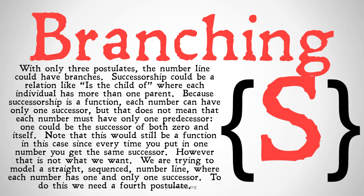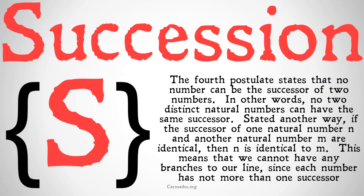However, this is not what we want. We are trying to model a straight, sequenced number line where each number has one and only one successor. To do this, we need a fourth postulate. The fourth postulate states that no number can be the successor of two other numbers. In other words, no two distinct natural numbers can have the same successor. Stated another way, if the successor of natural number n and the successor of natural number m are identical, then n is identical to m. This means we cannot have any branches in our line, since each number has no more than one predecessor.